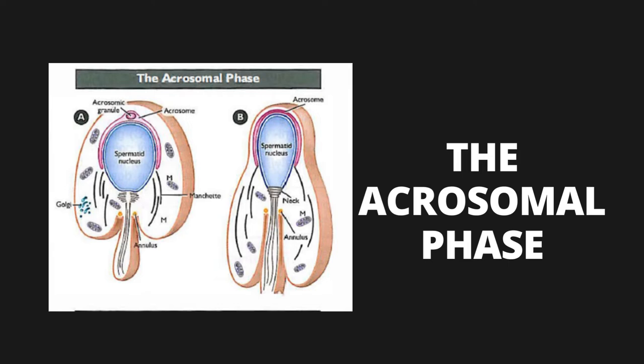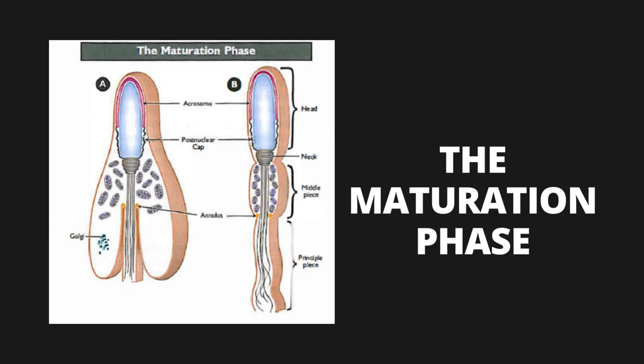In the acrosomal phase, letter A: the spermatid nucleus begins to elongate, and the acrosome eventually covers the majority of the anterior nucleus. The manchette forms in the region of the caudal half of the nucleus and extends down toward the developing flagellum. In letter B, the neck and annulus are formed, which will become the juncture between the middle piece and the principal piece. In the maturation phase, mitochondria form a spiral assembly around the flagellum defining the middle piece, the post-nuclear cap is formed, and the annulus marks the juncture between the middle piece and the principal piece.